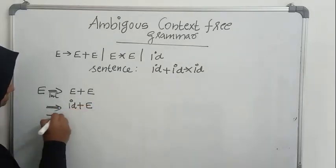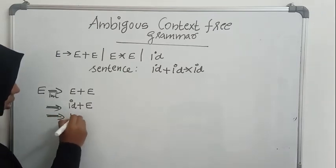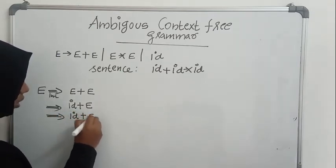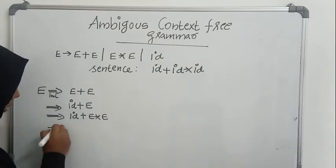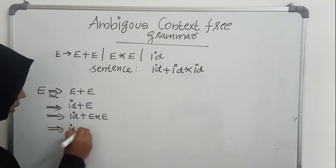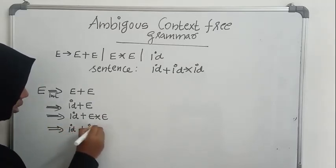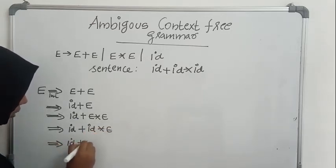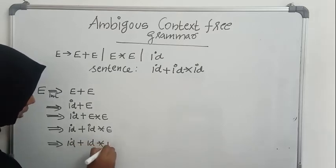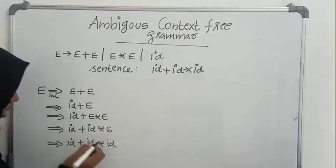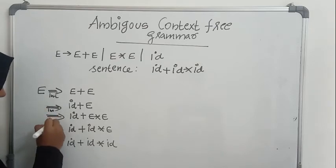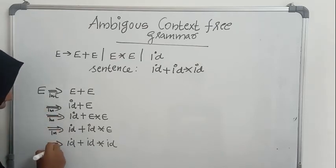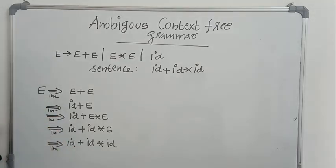Now plus E. This E will be converted to E star E. Now in the next step, I am converting the first E into id, then star E. Now in the next step I am replacing the final non-terminal with its corresponding terminal. So I got id plus id star id using leftmost derivation. If I can get one more leftmost derivation to derive the same sentence, I can definitely say that this grammar is ambiguous.